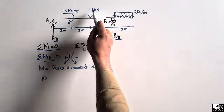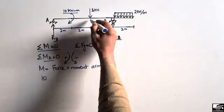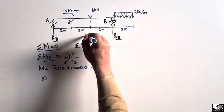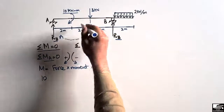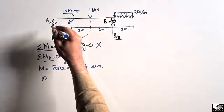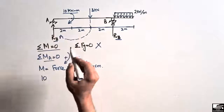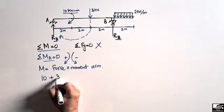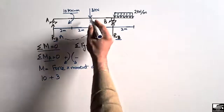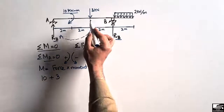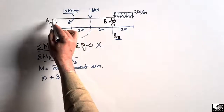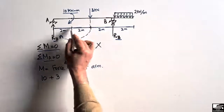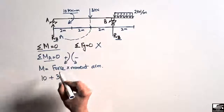The 3 kilonewton concentrated load acts in the clockwise direction about point A, so it is also positive. The moment is: +3 kilonewton multiplied by its moment arm. The distance from that load to point A is 2 plus 2, which equals 4 meters.